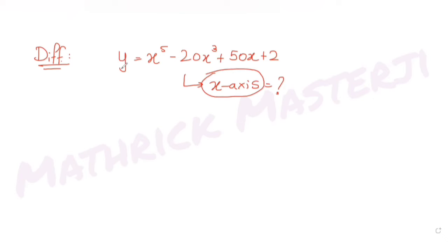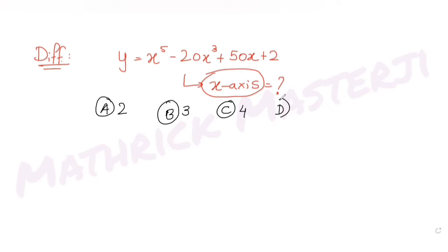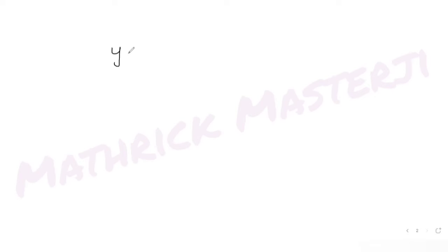The answer choices given are 2, 3, 4, and 5. We need to figure out which one is correct for the number of points where this curve intersects the x-axis. To solve this, we'll apply the concepts of differentiation.